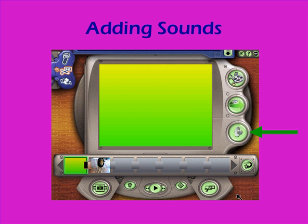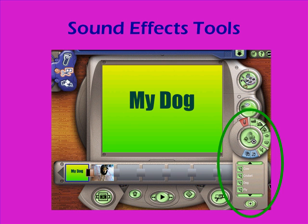Now I'm ready to add my sound, so I click on the third button on the right. That opens up the sound tools. I can click on the microphone to record my own sounds or narration. I can click on the green buttons to add clip sound effects. The blue buttons will add music.